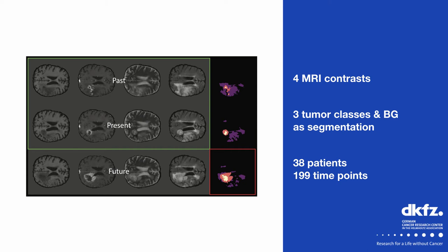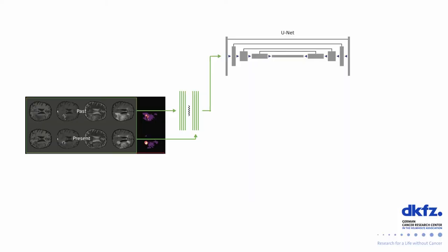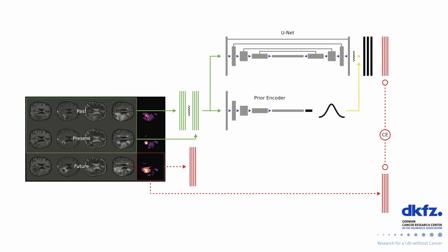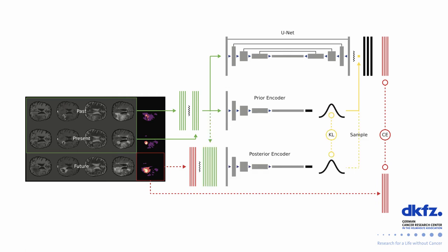We basically start with a regular U-Net that sees the input scans. We then have a second network called the prior encoder that sees the same input and predicts the parameters of a Gaussian distribution from which we can sample. The sample is then injected into the U-Net a few layers before the final output to produce a segmentation. For training, we use a cross-entropy loss to compare with the observed future segmentation. We also have a third network, almost identical to the prior encoder, that also sees the future segmentation.